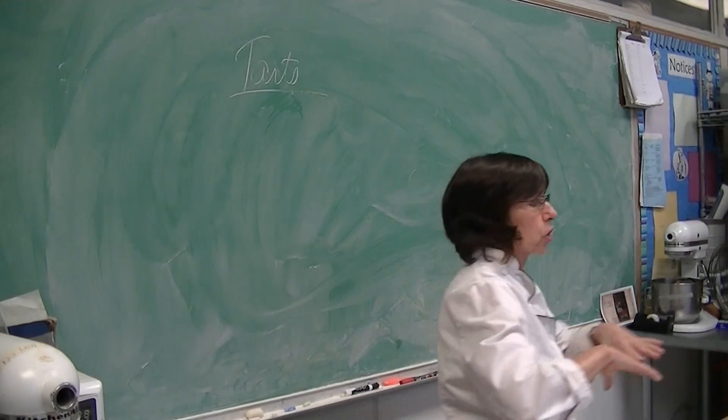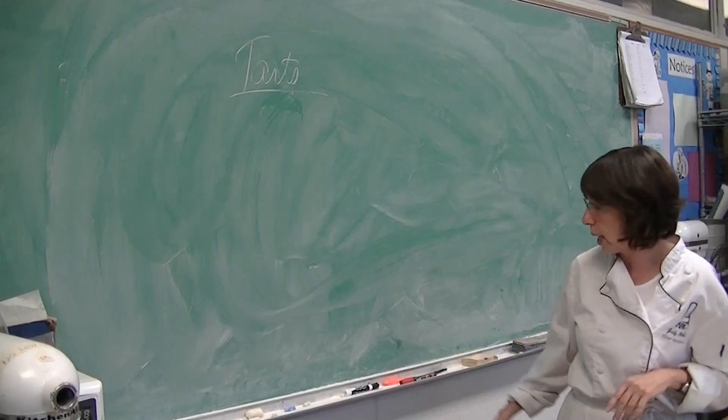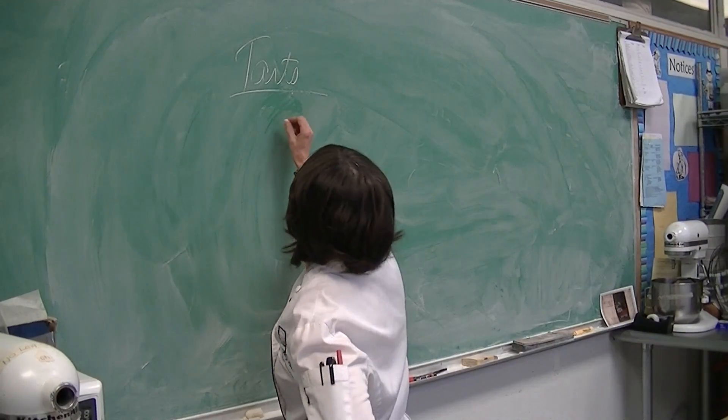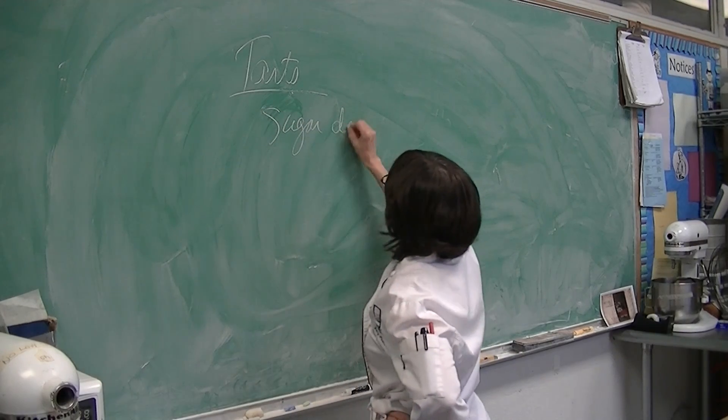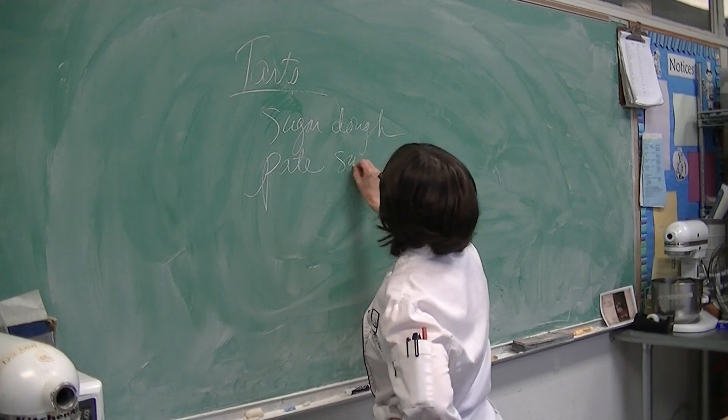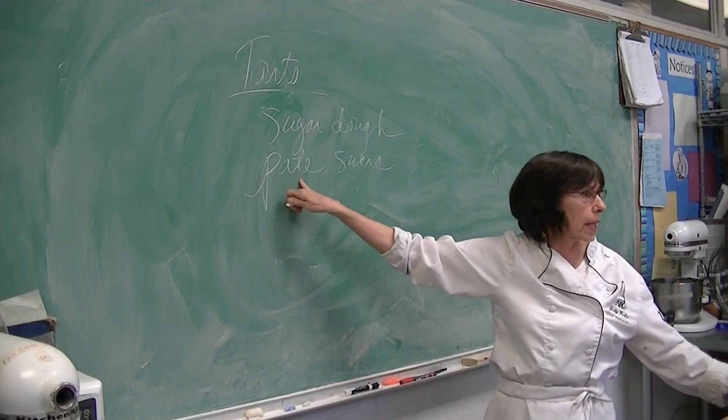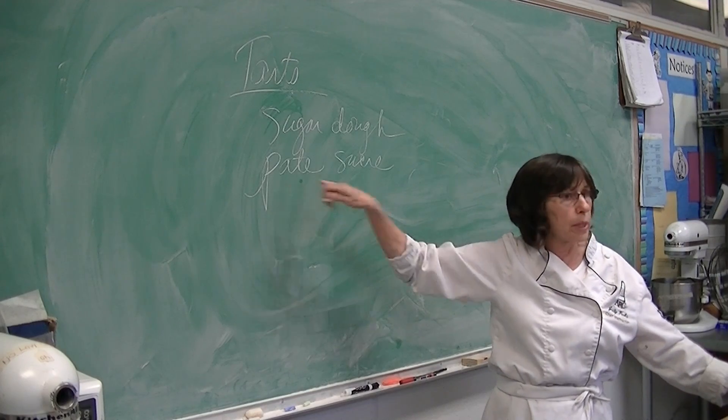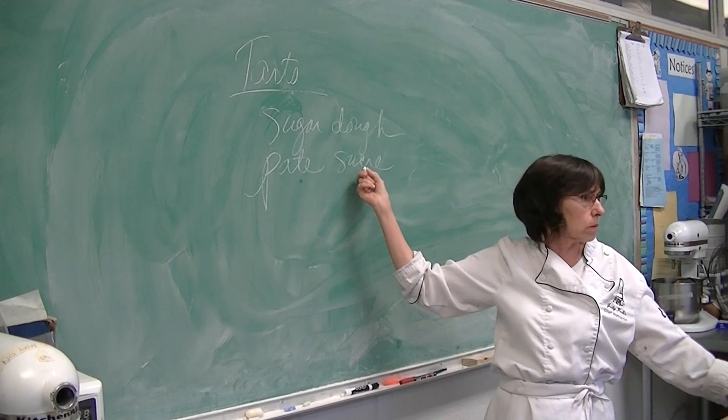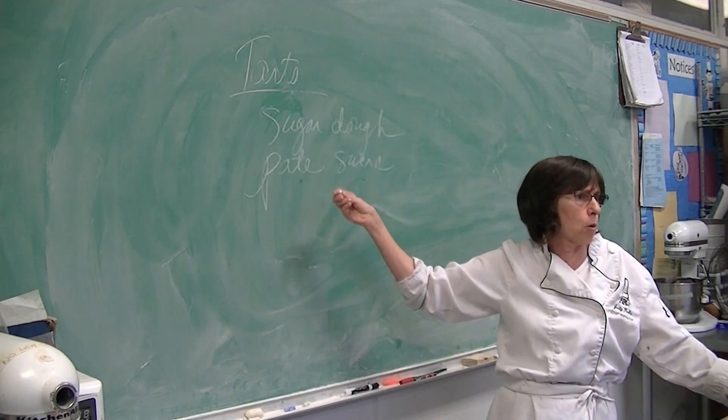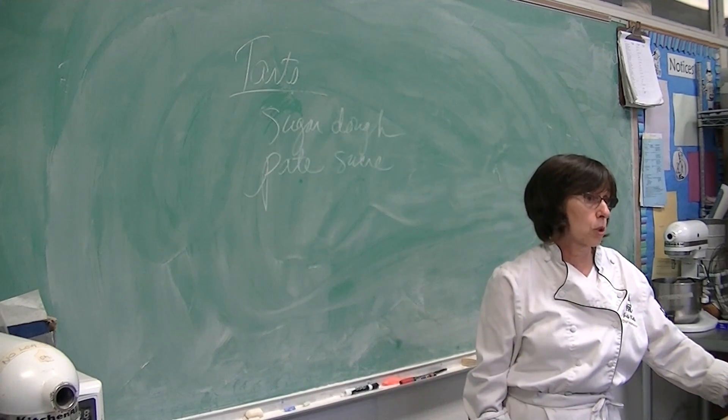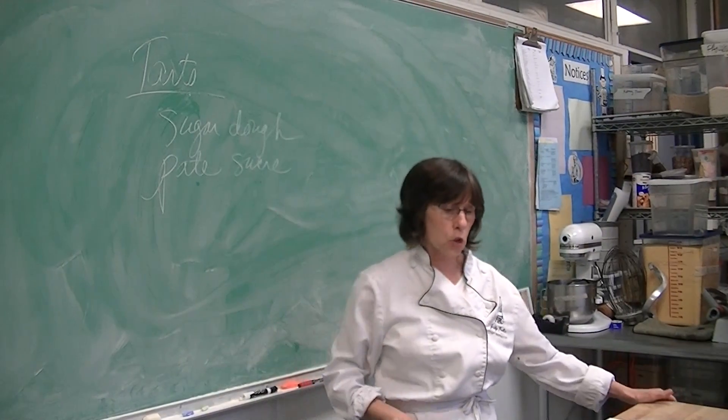The crust that we're using is just kind of an all-purpose crust. Our book calls it short dough. It also goes by the name sugar dough and pâte sucrée. When you see the term pâte, this is pâte, not pâté. Pâte means paste, means pastry, means dough. Sucrée, what do you think that means? Sugar. So here you have your sugar dough. Often times you'll see it called pâte sucrée in a textbook. Our book calls it sugar dough.